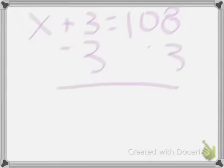Because we have 3 minus 3, and that's automatically 0, we can just mark that out. 108 minus 3 equals 105. We're going to bring down the remaining items, which is the x and the equals.